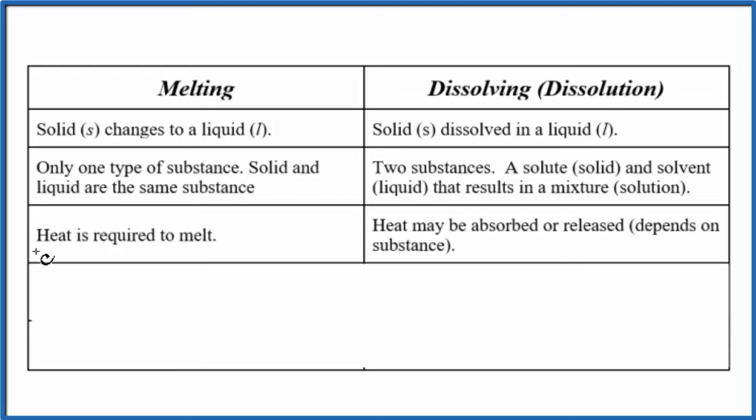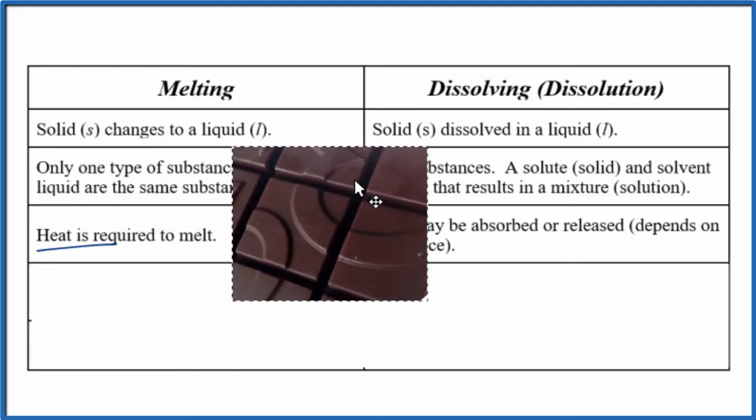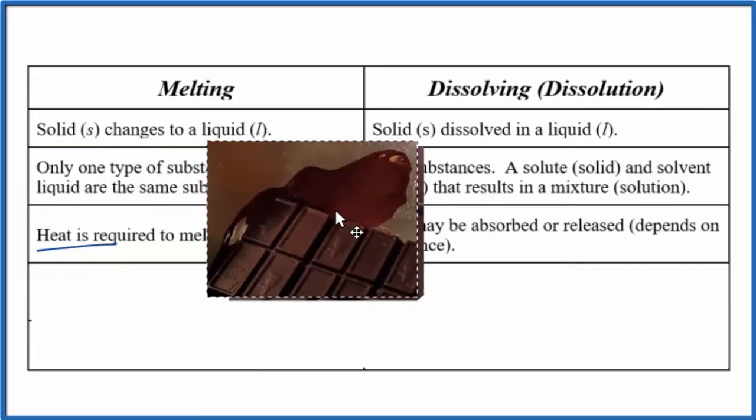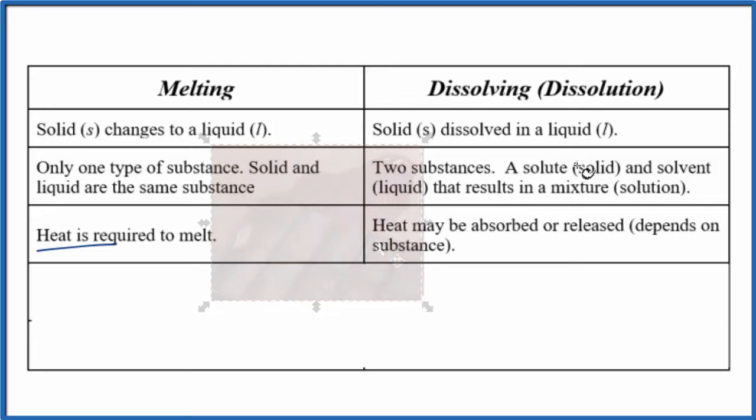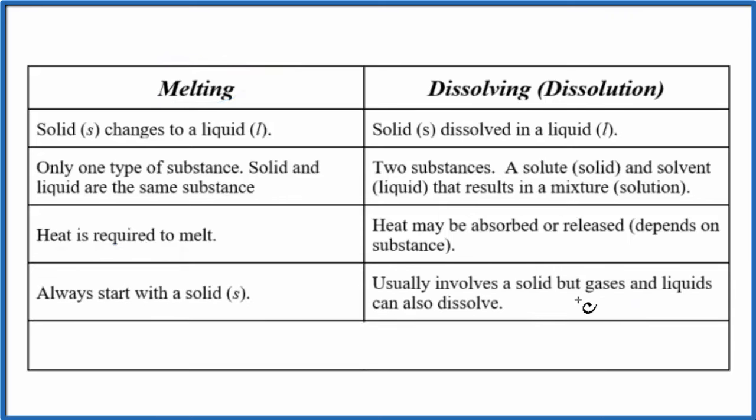When we want to melt something we need heat. So think about our chocolate. We have our chocolate here, we heat it up and we end up with the chocolate melting, becoming a liquid. For dissolving, sometimes we'll have heat given off - it'll feel hot. Sometimes it'll absorb heat from the water - it'll feel cold. Really depends on the substance. But when we're talking melting, we're always going to have heat energy required.